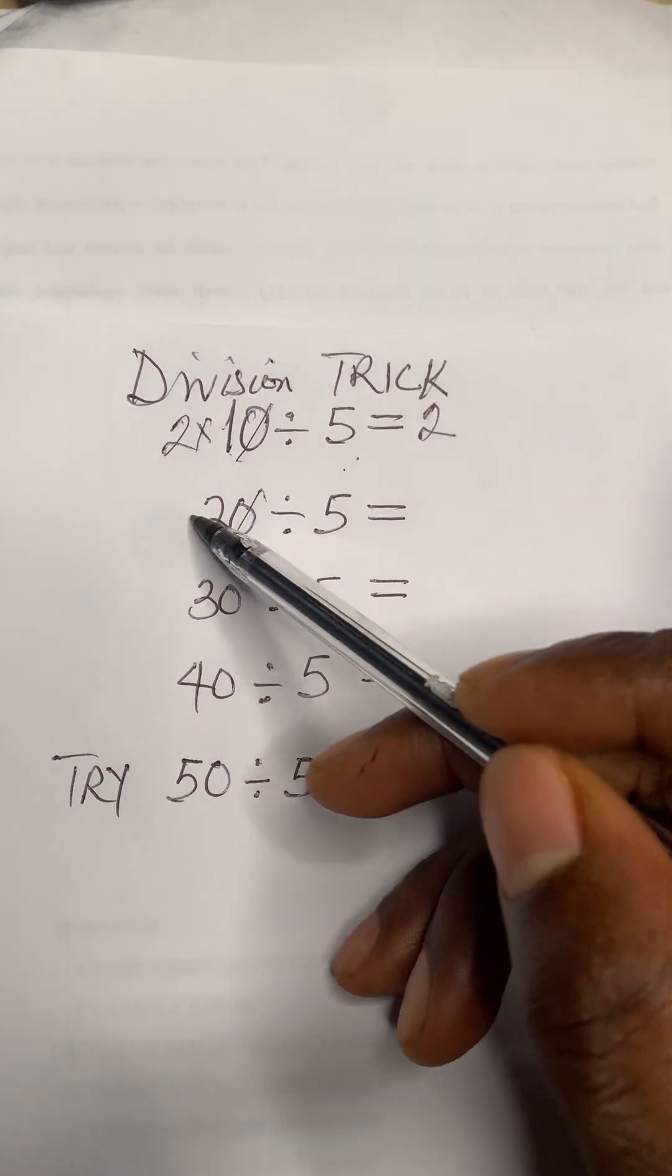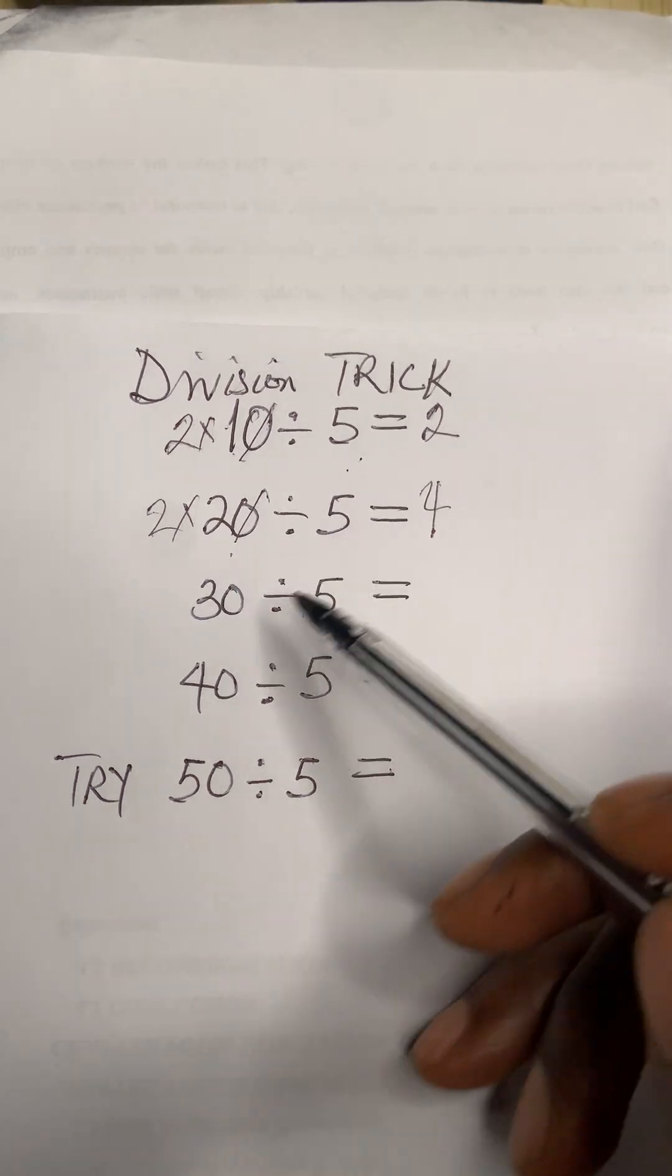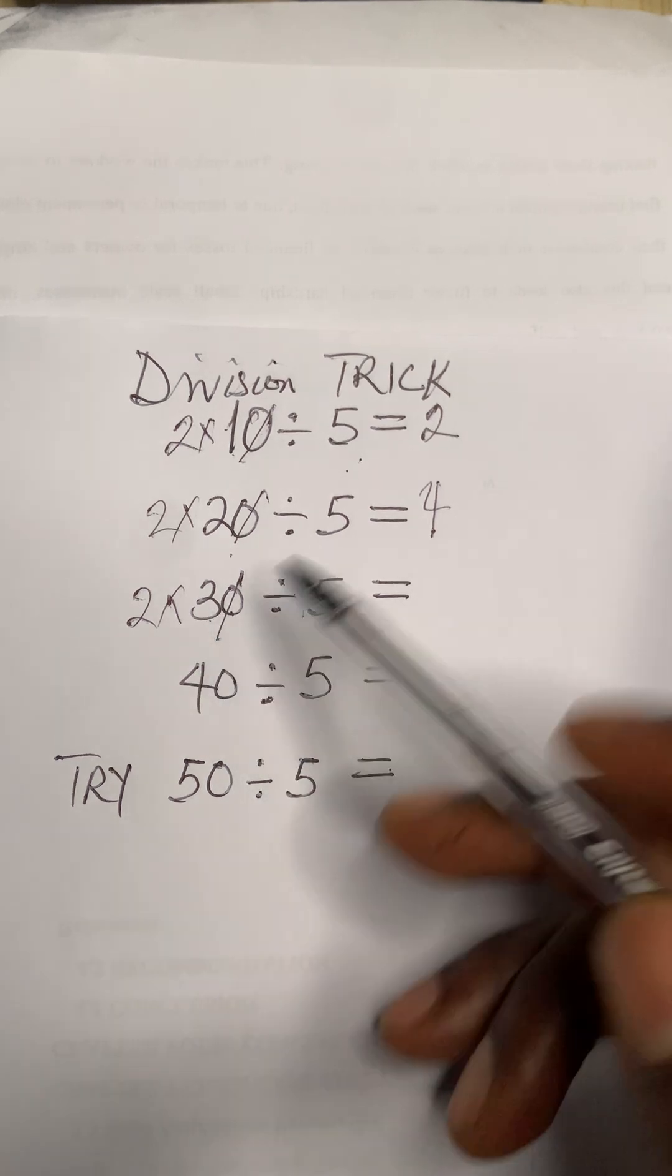What of this one? Just cancel the zero, then multiply by two. Two times two will give you four, that's the answer. For this one, cancel this zero, then multiply by two. Two times three will give you six, that's the answer.